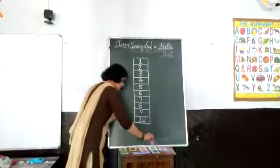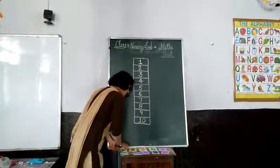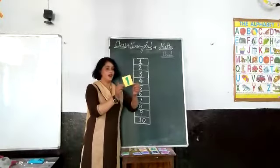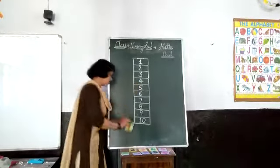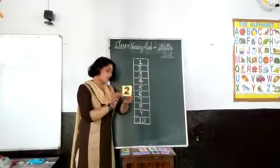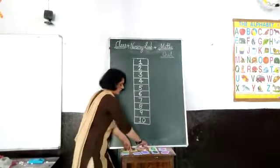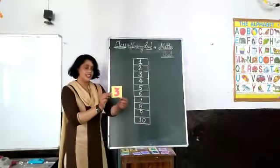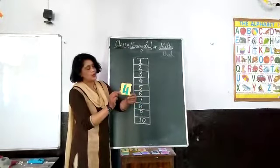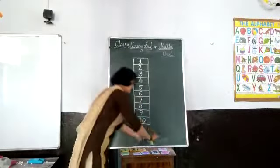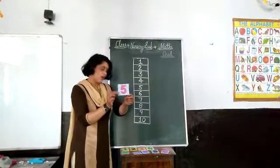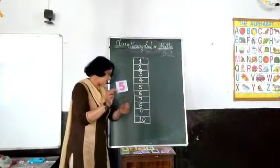Now repeat again number. This number 1. 1, 1, 1. This number 2. 2, 2. This number 3. 3, 3. This number 4. 4, 4, 4. This number 5. 5, 5, 5.